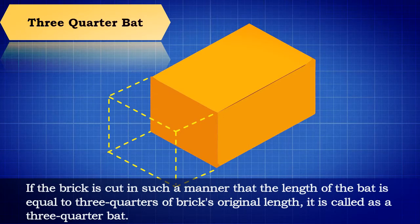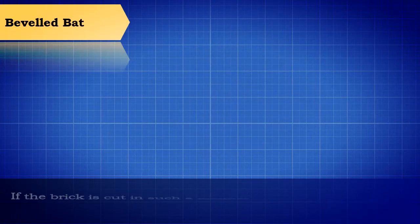Three-quarter bat: If the brick is cut in such a manner that the length of the bat is equal to three-quarters of the brick's original length, it is called as a three-quarter bat.